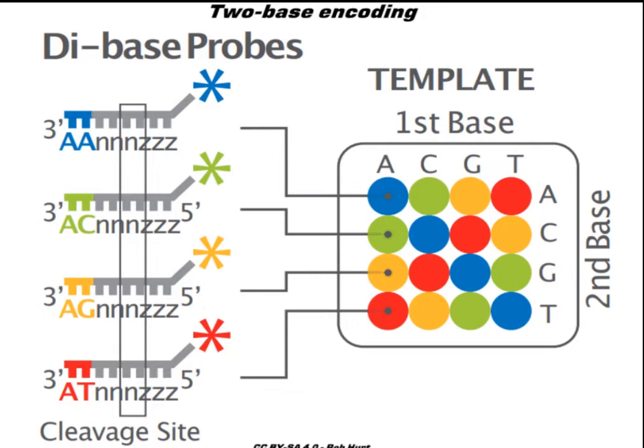SOLiD uses two-base encoding to decode platform data. Each base pair of the probe is one of four possible colors. There are four dyes and four oligonucleotides for every dye.